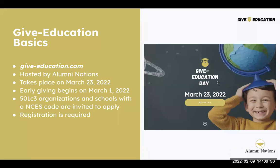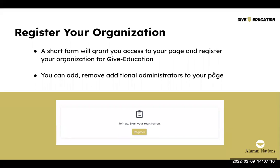Give Education is hosted by Alumni Nations and will take place on March 23rd this year. It's a 24-hour giving day running from midnight to midnight central time. Early giving will start on March 1st. Registration is required, and any 501(c) organization or a school with an NCES code is welcome to participate. To register, go to giveeducation.com and click register. Within 24 hours of registration, you'll receive an email with next steps.